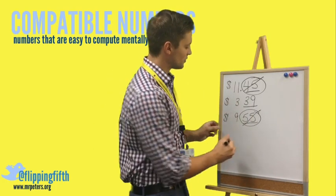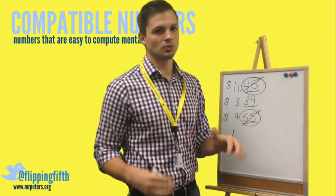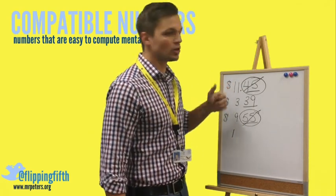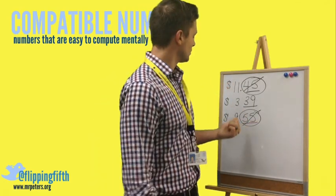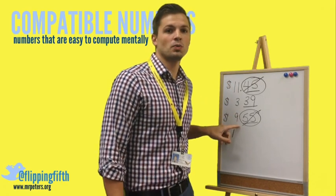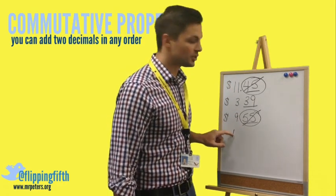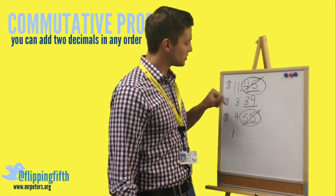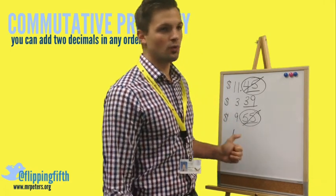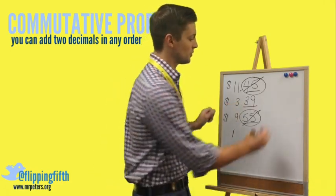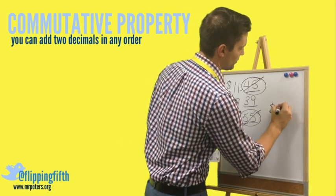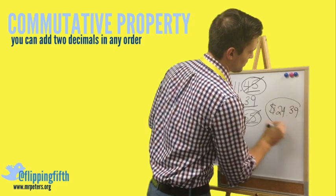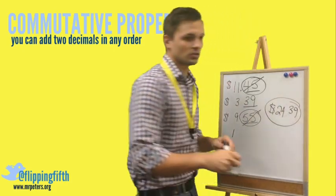We're writing this down so you can see the process, but we're doing it mentally. We add the dollar, then handle the whole numbers: 11 plus 9 is 20, plus 1 is 21, plus 3 is 24. Finally, we add in the 39 cents, giving us $24.39. That's how we use compatible numbers for mental math.